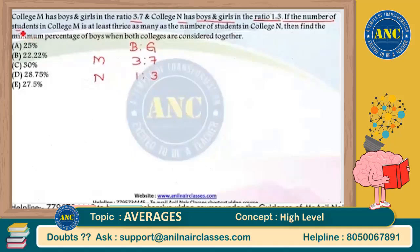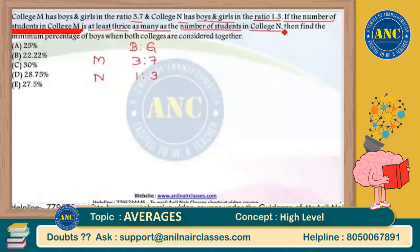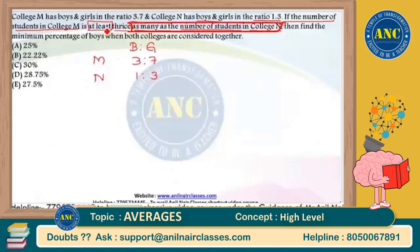The number of students in College M is at least 3 times as many as the number of students in College N. Very very important key point in this question is 'at least.' We need to find the minimum percentage of boys when both colleges are considered together.